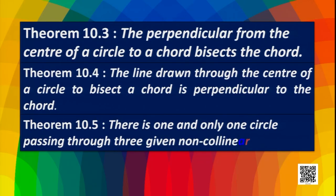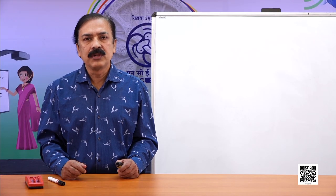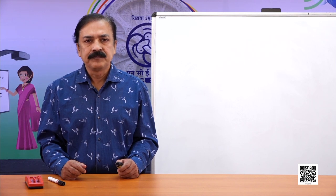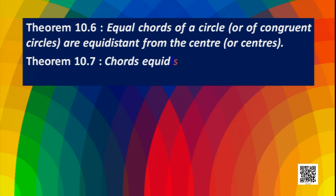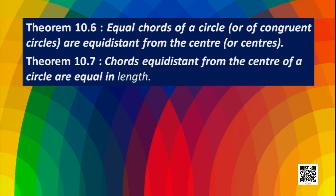Another theorem states that there is one and only one circle passing through three given non-collinear points — that is, the circle through three non-collinear points is unique. Next, equal chords of a circle or of congruent circles are equidistant from the center or their centers. By congruent circles we mean circles having the same radius. The converse states that chords equidistant from the center of a circle are equal in length.